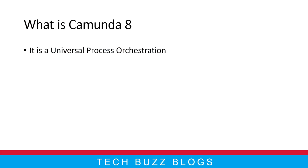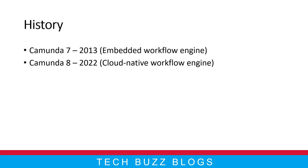Coming to the history of Camunda: Camunda 7 was introduced in 2013 with an embedded workflow engine. Camunda 8 was introduced in 2022 as a cloud-native workflow engine. If you already know Camunda 7, you know that you inject Camunda dependencies into your application and it works as an embedded engine. Camunda 8 is completely different — you inject a cloud dependency into your project and need to interact with the cloud.